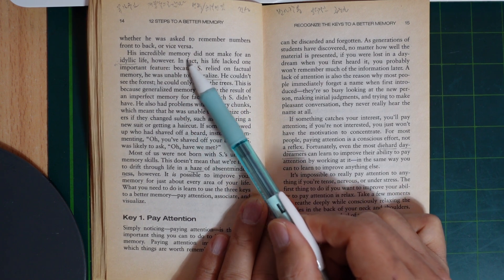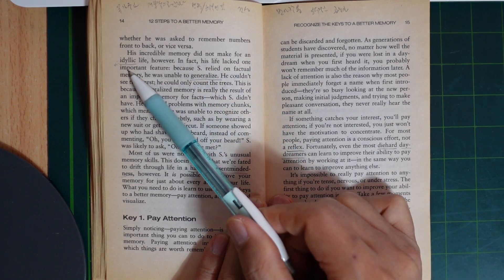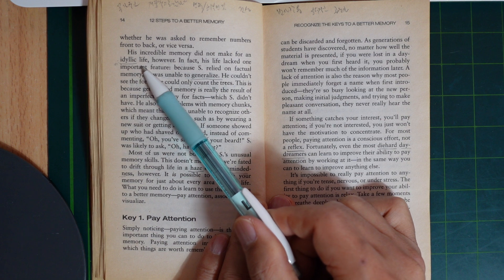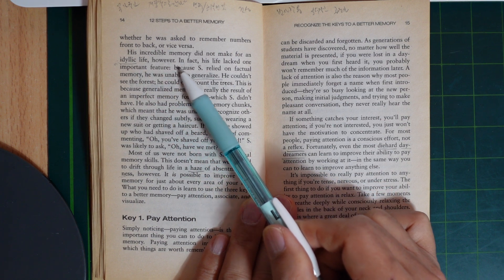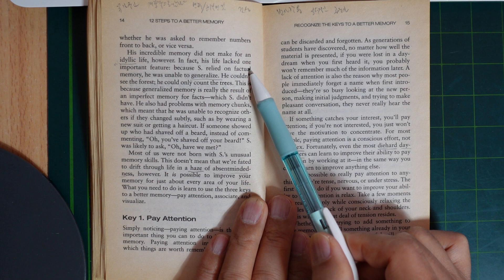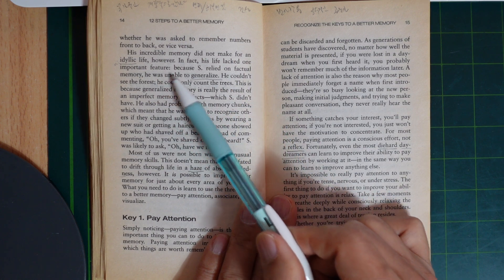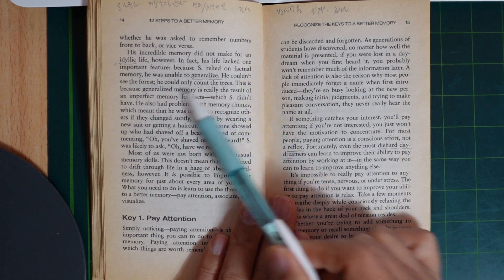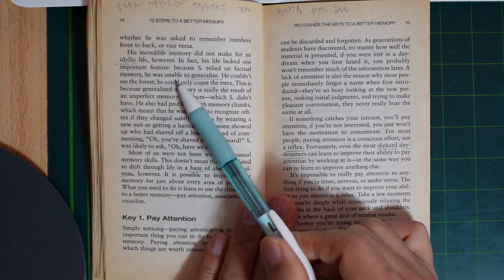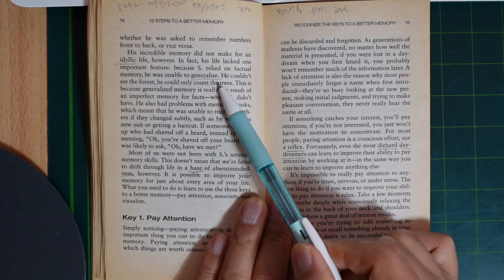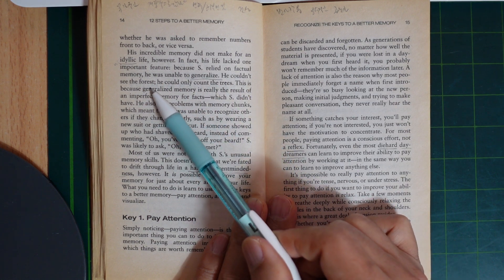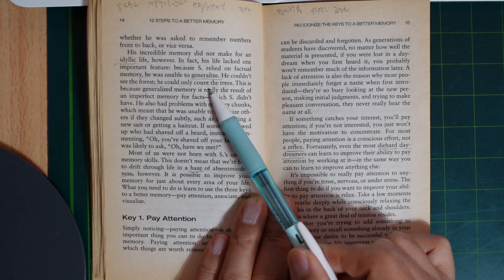His incredible memory did not make for an idyllic life. However, in fact, his life lacked one important feature because S relied on factual memory. He was unable to generalize. He couldn't see the forest; he could only count the trees.